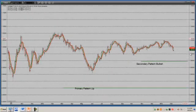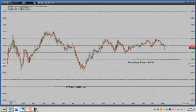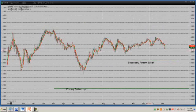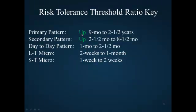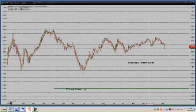We can see that our primary pattern is bullish and our secondary pattern is also bullish. Let's plug that into the ratio so we can keep track of this — both primary and secondary are up. Next we need to calculate that day to day pattern. From experience as a swing trader and shorter term trader, the day to day pattern is extremely influential — the most influential pattern if you are a short term or swing trader. The day to day pattern happens to be 1 month to 2.5 months, and it's so important because it reflects the day to day news flow in a market.